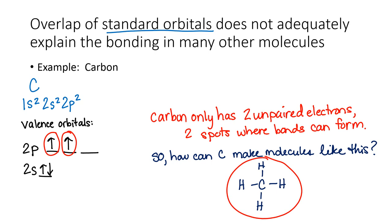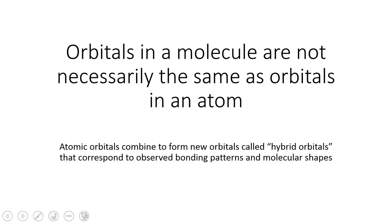So how can we explain this? Well, our hybridization theory — our theory of orbital hybridization — tells us that orbitals in a molecule are not necessarily the same as orbitals in an atom. Atomic orbitals are going to combine to form new orbitals called hybrid orbitals, and this corresponds to our observed bonding patterns and molecular shapes.